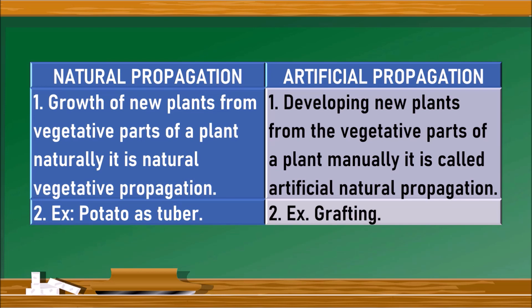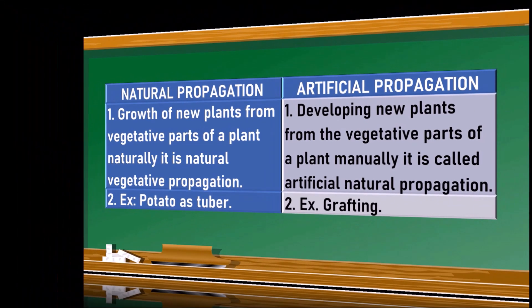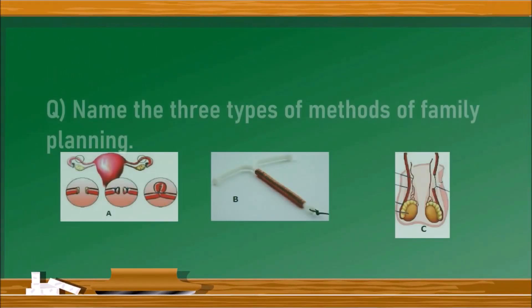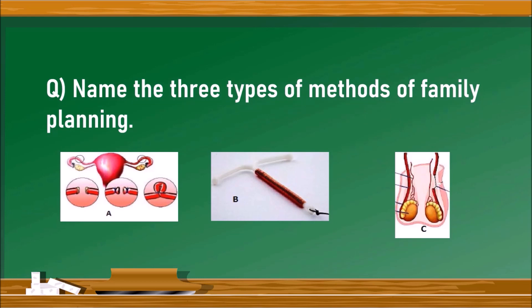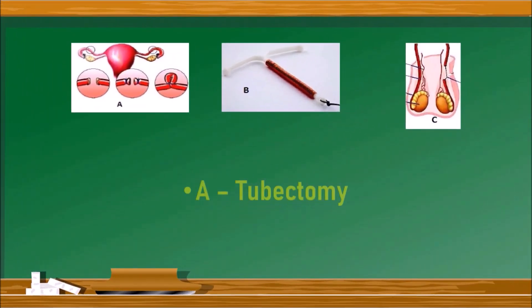Whereas cutting, grafting, and layering are the examples for artificial propagation. Let us go to the next question. Name the three types of methods of family planning given in the following picture. Let us see the answer.